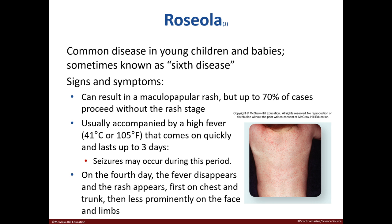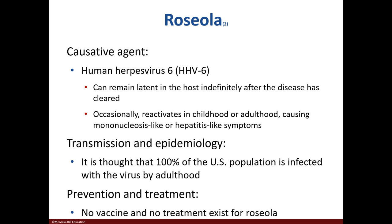Roseola is another disease typically seen in young children and infants. A rash is sometimes seen, but up to 70% of patients don't exhibit a rash. A high fever is seen followed by a rash on the chest and trunk. The causative agent is HHV-6, which may remain latent after a patient clears the virus. The mode of transmission is unknown, and it's believed that all of us have had the virus by the time we are adults. There is no treatment or prevention.